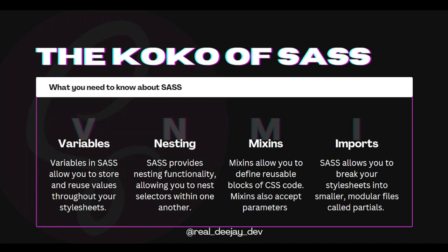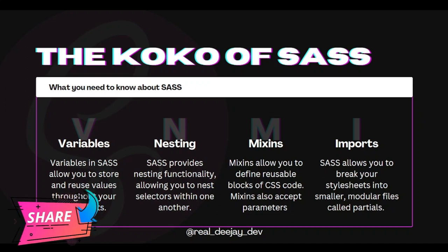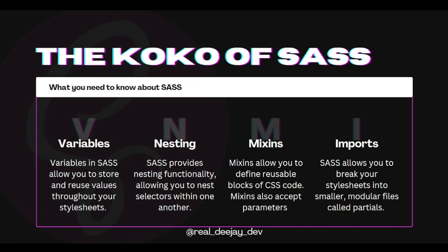There are some key things you need to know about SAS. Number one: variables — SAS allows us to store values and use them anywhere in our stylesheets. For nesting, we write code inside code inside code. We also get mixins and imports. With the newer version of SAS, instead of the import keyword, we now use the keywords 'forward' and 'use'.